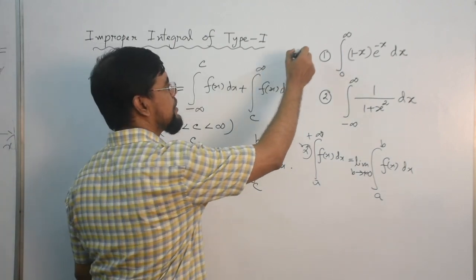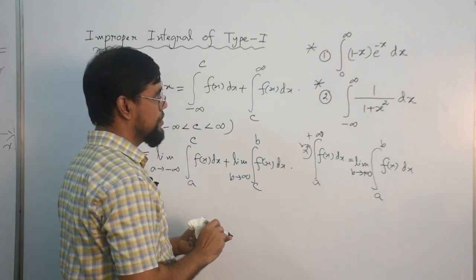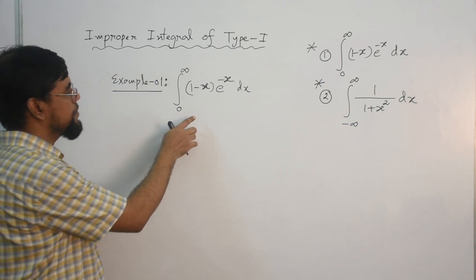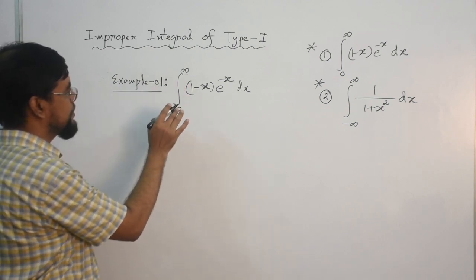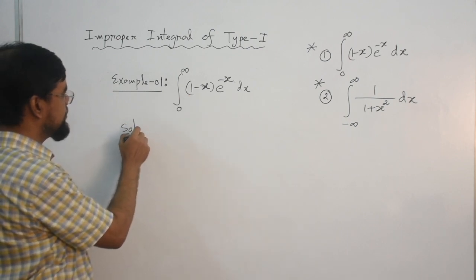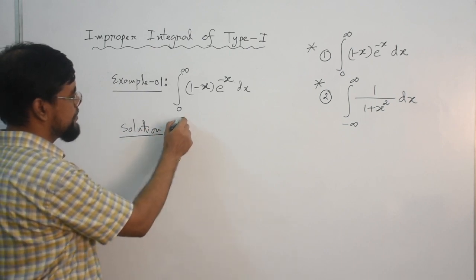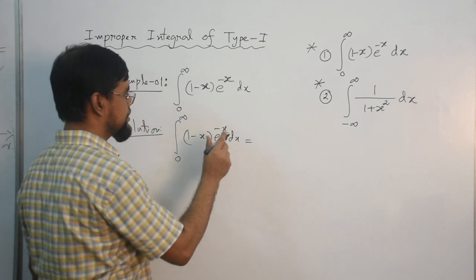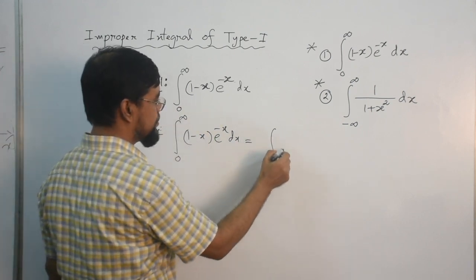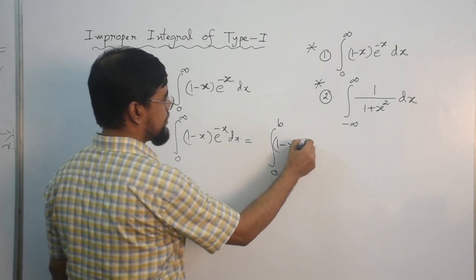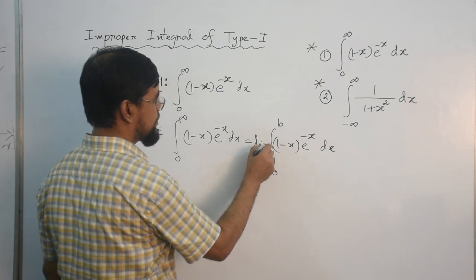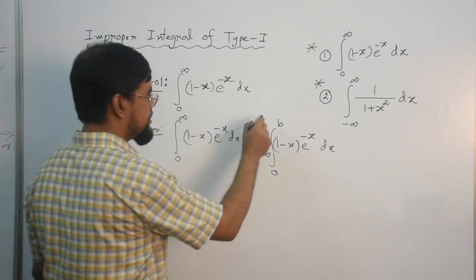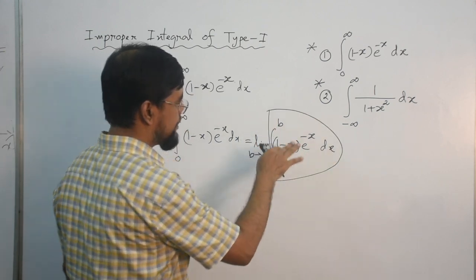So now in this lecture I want to evaluate two integrals, example 1 and 2, using these definitions. Let us evaluate this improper integral. Why is it improper? Because of the infinity in the upper limit. So how can we evaluate it? The integral from 0 to infinity of (1 - x)e^(-x) dx. Using our second definition, I need to replace this infinity by B: limit as B tends to infinity of the integral from 0 to B of (1 - x)e^(-x) dx. B approximates infinity, so now this integral is proper and we can evaluate it.